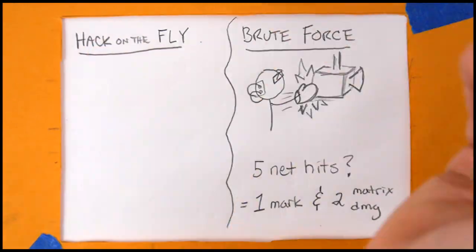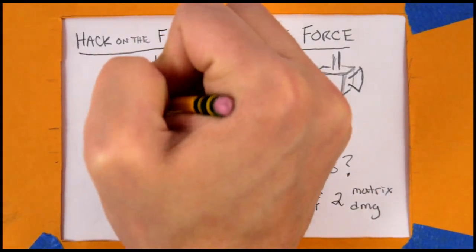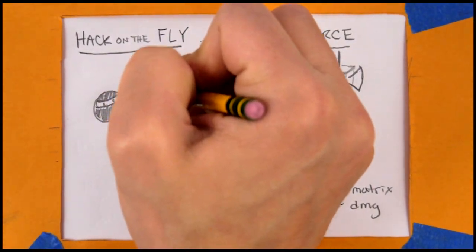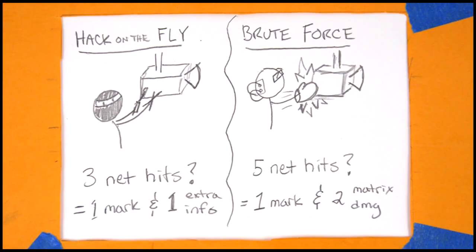The target resists this damage with the device rating plus firewall. If you were using hack on the fly, then every two net hits gets you a free piece of information about the target, as if they had gotten a hit on a matrix perception test.